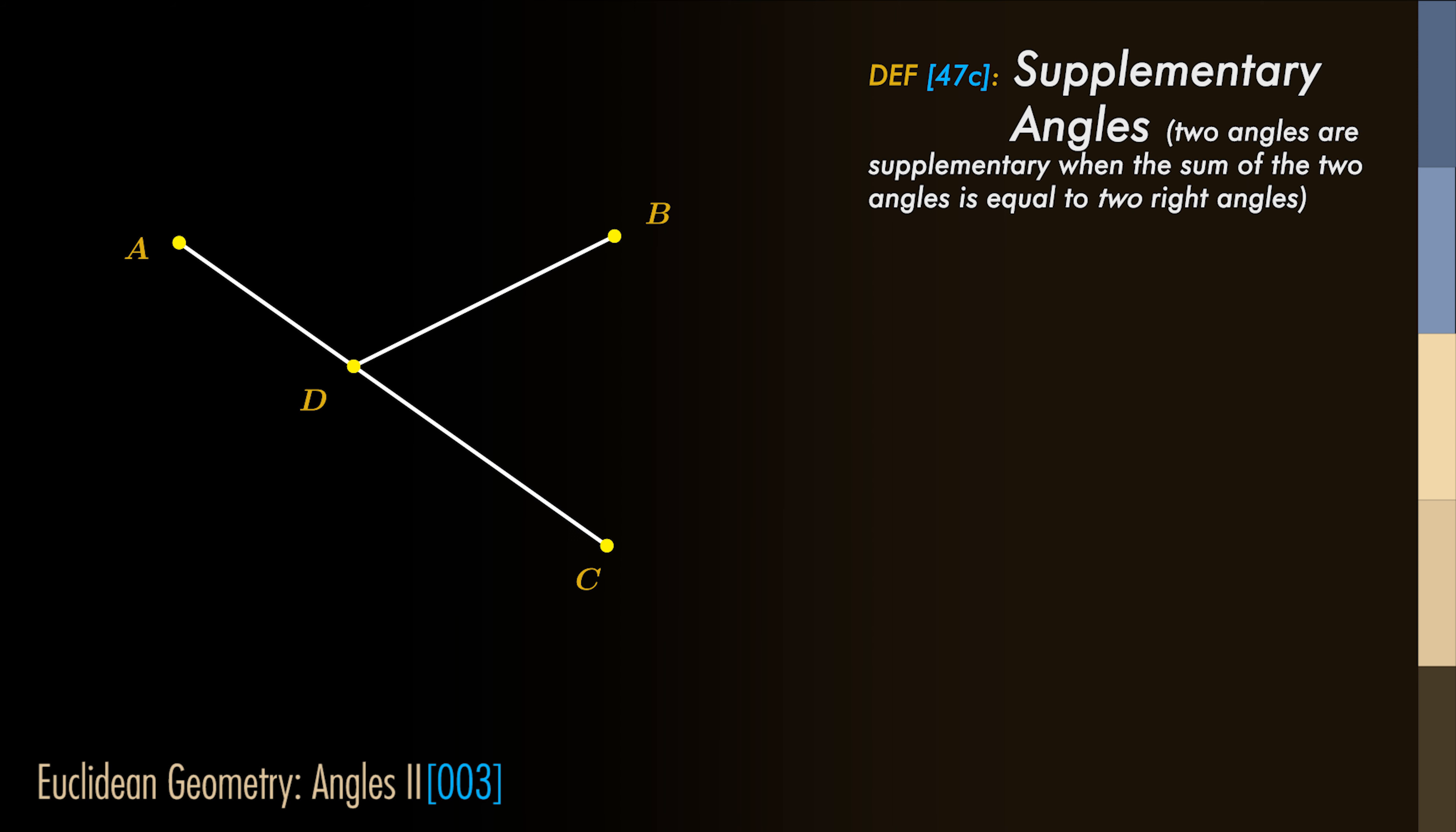Now that we have defined the sum of angles, we can introduce two types of angles. What we are seeing here are two supplementary angles. We call two angles supplements of each other when the sum of the two angles is equal to two right angles.